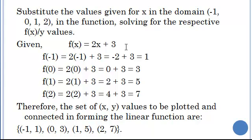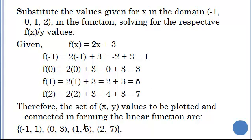The linear function is f(x) equals 2x plus 3. We substitute each domain value one by one. f(minus 1) equals 2 times minus 1 plus 3, which gives 1. Substituting 0 gives 3. Substituting 1 gives 5. Substituting 2 gives 7. We then write the x values and their corresponding y values together: the four points are (minus 1, 1), (0, 3), (1, 5), and (2, 7), which are the points to plot on the graph.